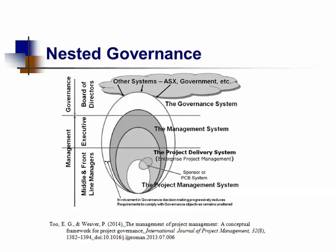The nested governance diagram shows the different levels of management. Governance flows from the board of directors down through the executive level to middle and front-line managers. The project management system and project delivery system — enterprise project management — with its sponsor is run by middle and front-line managers. Executives monitor this, and the board of directors uses other systems and government entities in their governance system with external stakeholders. Involvement in governance and decision-making progressively reduces as you move down, while requirements to comply with governance objectives remain unchanged.